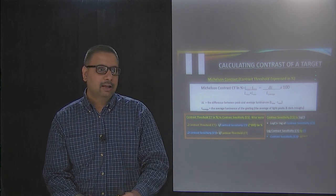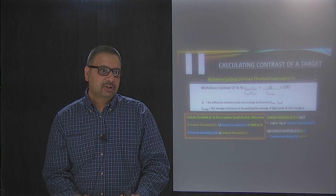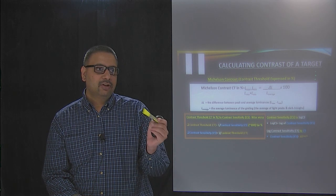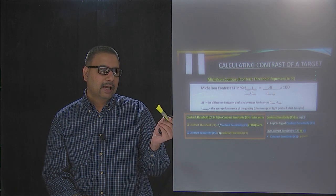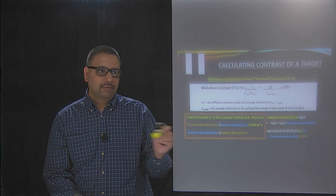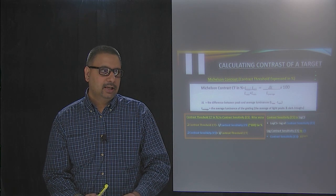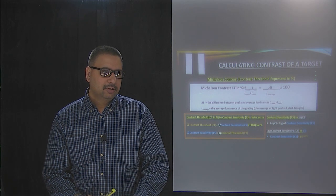If this is the grating, the L average is the average luminance of the black bar and the white bar, all of them added together. That is the denominator.